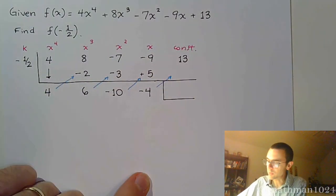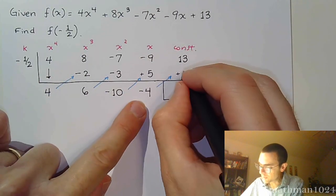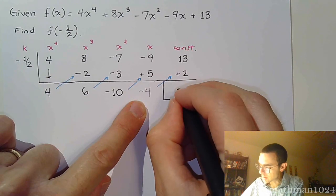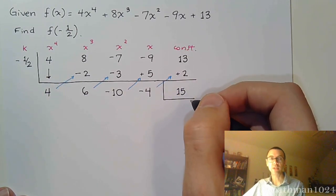Multiply times negative 1 half one last time. Negative times negative is positive. And half of 4 is 2. 13 and 2 is 15.